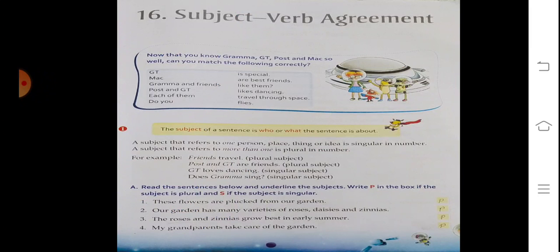Now Exercise A: read the sentence below and underline the subject. Write P in the box if the subject is plural and S if the subject is singular. Number one: 'These flowers are plucked from our garden' - this is plural subject.